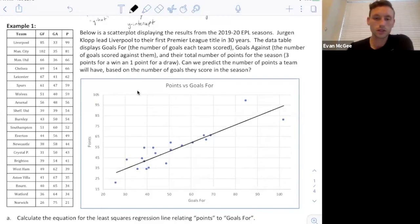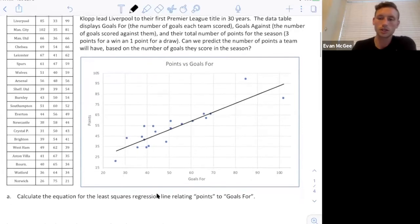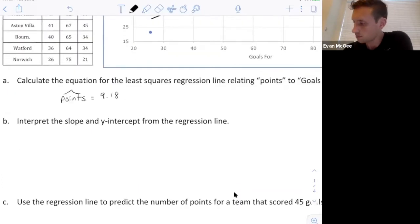The first question was, calculate the equation for the least squares regression line relating points to goals for. These are my two variables. You always relate y to x. I want you to take a note about how I wrote these variables out. I actually wrote points with a hat on top because this is representing the predicted amount of points from this equation here. And our x variable was goals for.